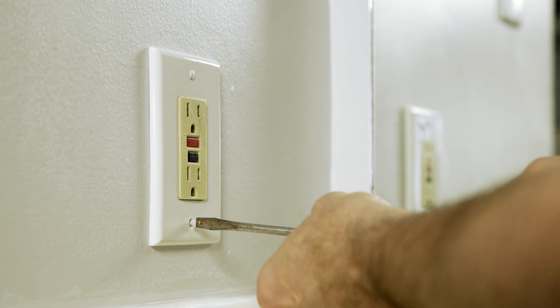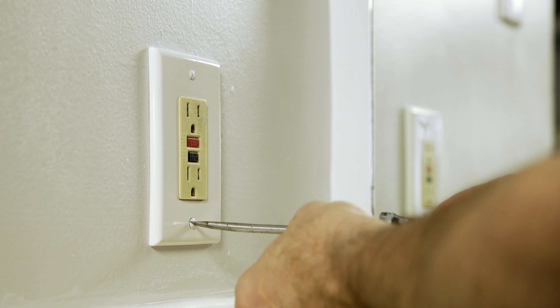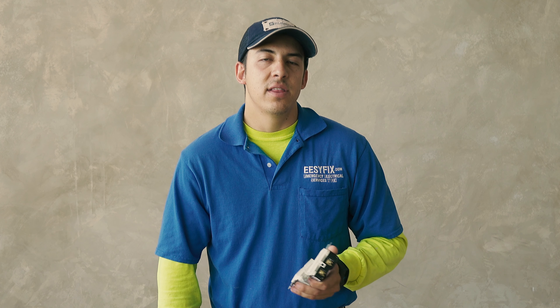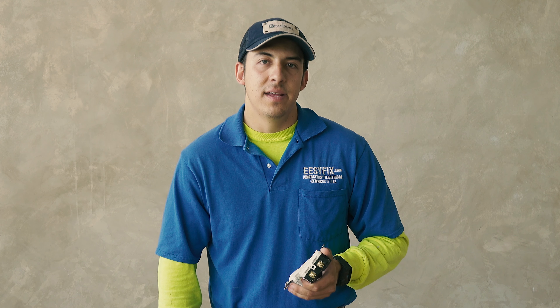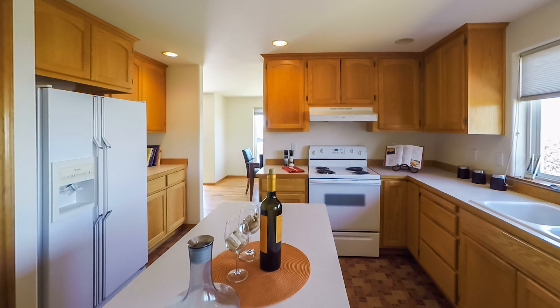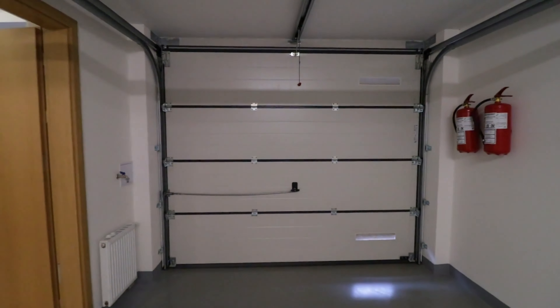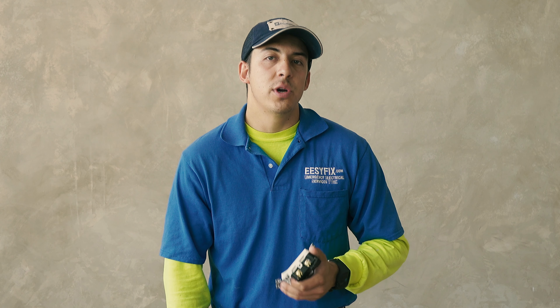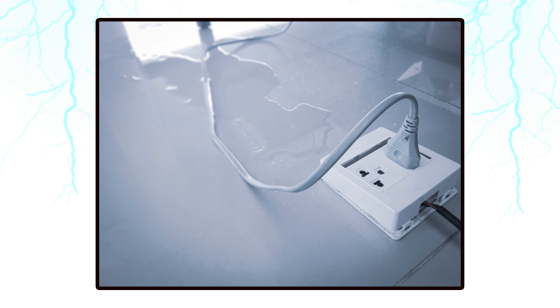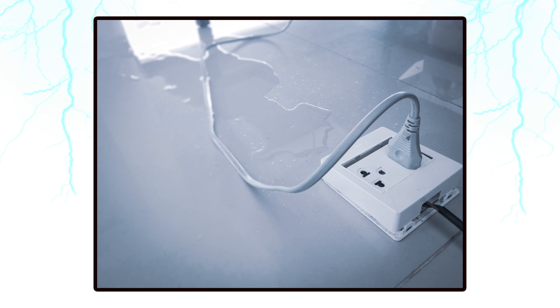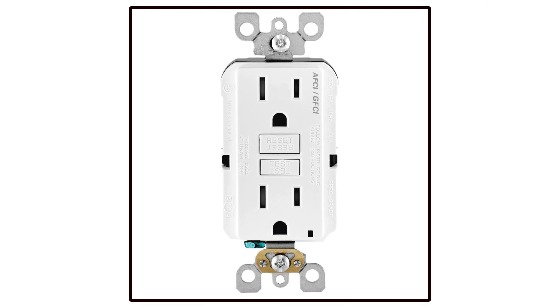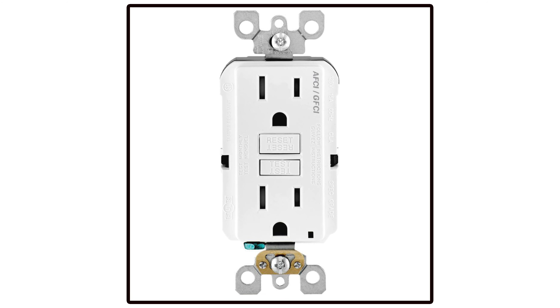In the past, GFCIs were installed locally where the danger of electrons bleeding out of the circuit was high, such as kitchens, bathrooms, and outside garages. This typically occurs when electrical equipment might be used around water. If there were multiple receptacles in these areas, they were typically protected by one GFCI receptacle.